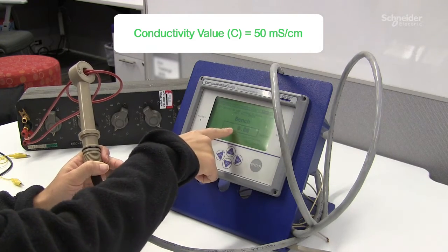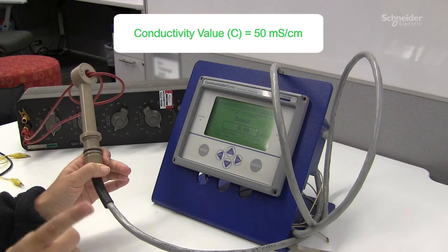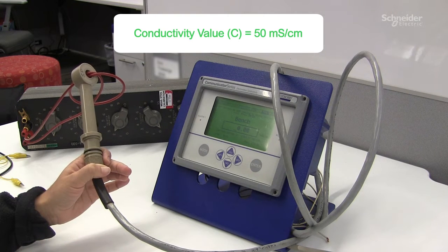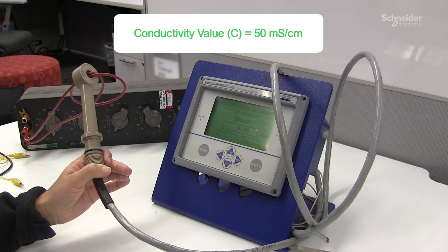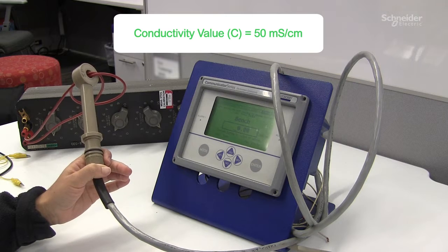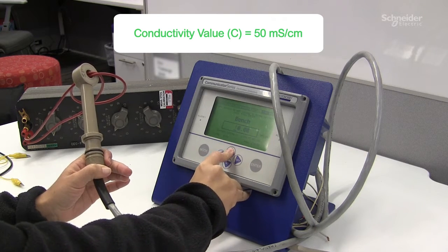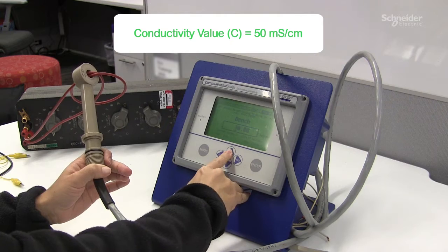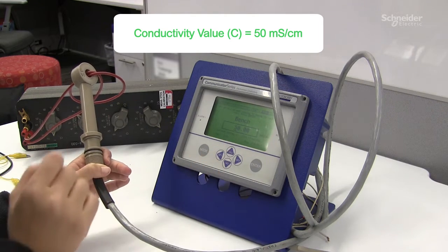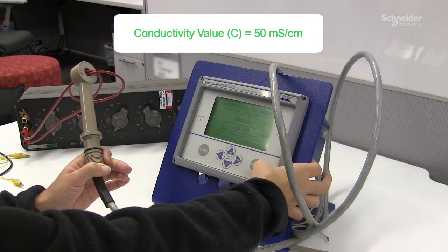Go to the first digit and enter the millisiemens that would correspond to your maximum conductivity limit. In our case it's going to be 50, five zero millisiemens per centimeter. Press enter.